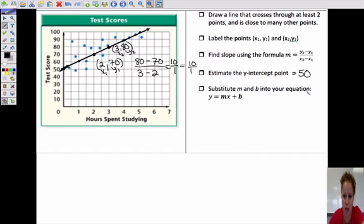And then we just substitute it into our equation. And this is y equals mx plus b, or y equals our rise over our run x plus b. So our equation would be y equals 10 over 1 x plus 50.